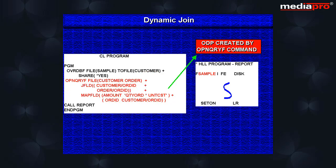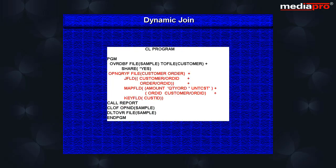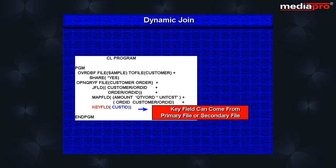Now when the application program runs, it will use the ODP created by the open query file command. Remember as usual to close the files and delete the override. In the case of dynamic joins, we close the files by referencing the primary file on the close file command. With the open query file command, we can also specify a key field or fields on which to sequence the selected records. Here the fields that make up the key can come from either the primary file or from a secondary file, which is not possible with logical files.